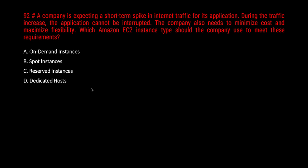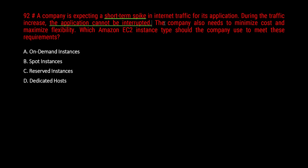Question 92: A company is expecting a short-term spike in internet traffic. During the traffic increase, the application cannot be interrupted. That keyword — 'cannot be interrupted' — immediately eliminates spot instances. The company also needs to minimize cost and maximize flexibility. 'Short-term spike' is the keyword for on-demand instances. On-demand is the only option that can handle short-term spikes while ruling out spot.